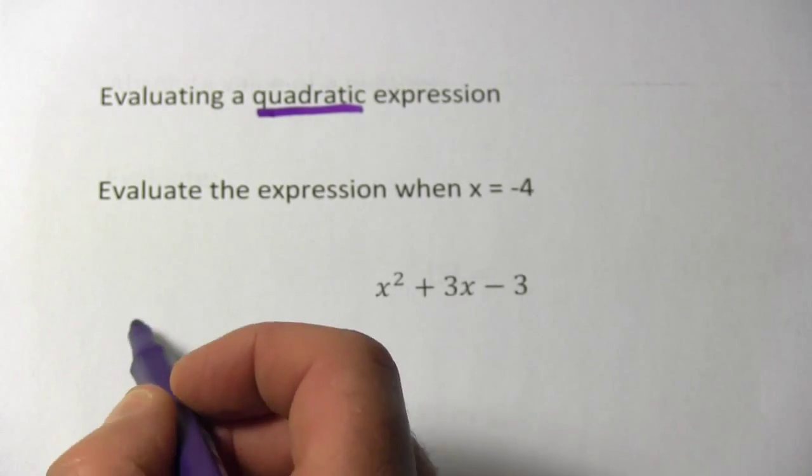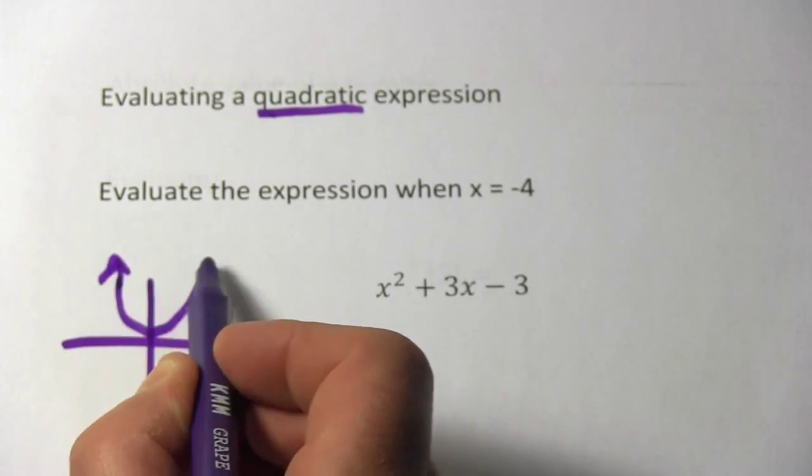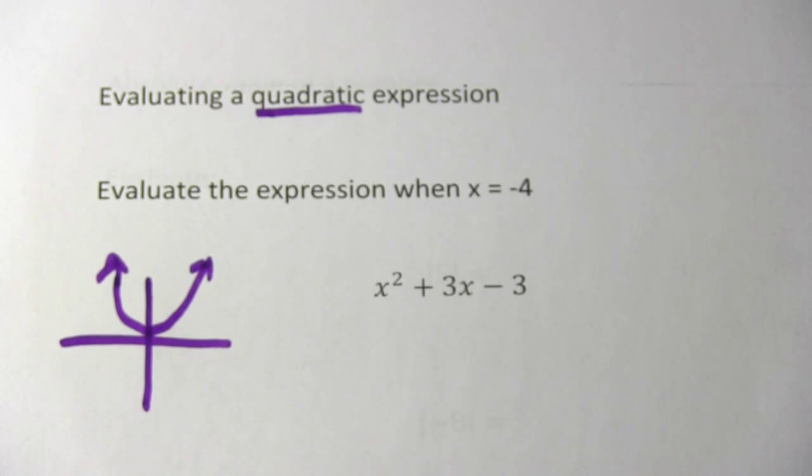You remember probably that if you graph a quadratic, it's going to look something like this, kind of that U shape, and it goes traveling on forever in both directions.